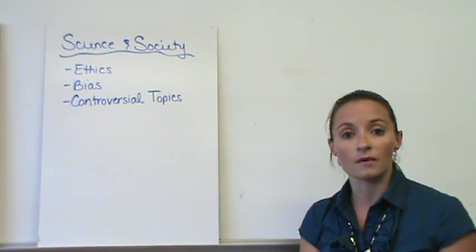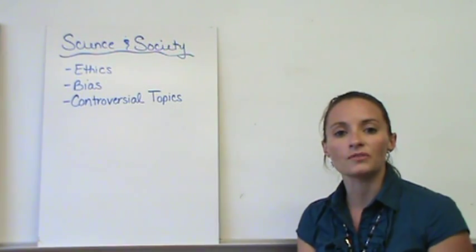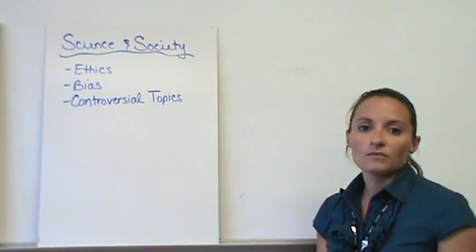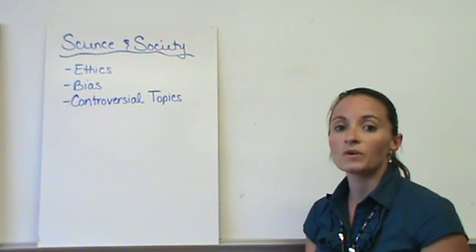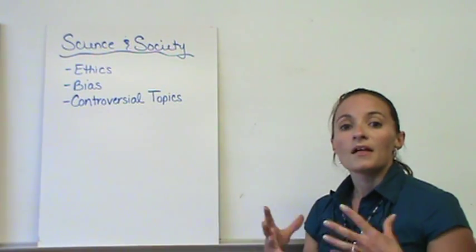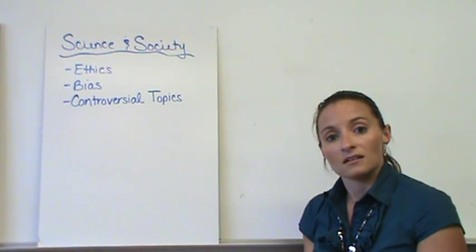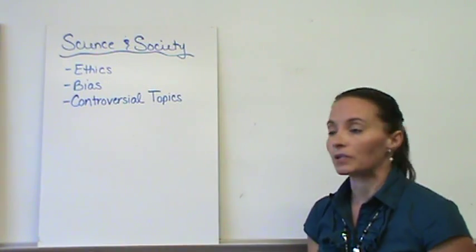So bias is something we try to avoid in science, and we need to avoid in science. We need to avoid it to keep that open-mindedness, back to the attitudes, to be able to understand what really happens in the natural world.